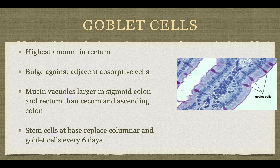Goblet cells are going to be highest in the rectum, because you need to produce a lot of mucus to protect the rectum from sharp feces or straining. The mucin vacuoles are larger in the sigmoid colon and rectum rather than the cecum and ascending colon, because we need it more in these areas as feces is ready to leave the body. Stem cells replace all other cells every six days, a similar turnover to the small intestine.